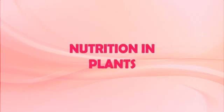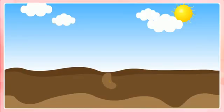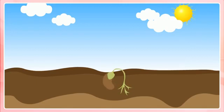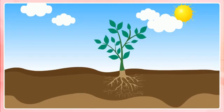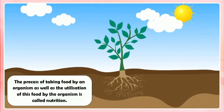Nutrition in Plants. All the living organisms require food. The organisms need to take food to obtain energy, to obtain material for growth, and to obtain materials for the repairs of damaged parts of the body. The process of taking food by an organism as well as the utilization of this food by the organism is called Nutrition.